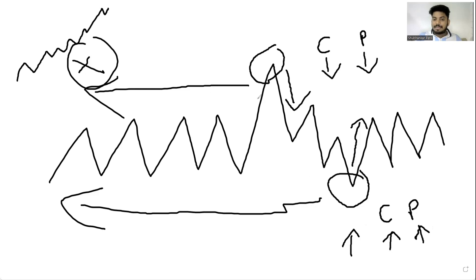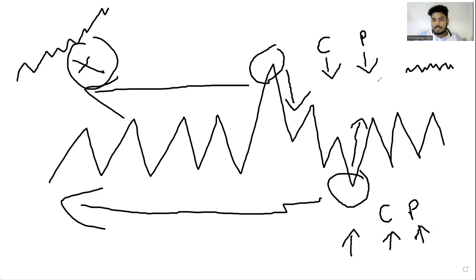So whenever implied volatility makes a top, I will be more inclined towards short volatility trading strategies like short straddles and short strangles. Why? Because if I sell call and put options at this point and the underlying remains flat, my call premium will cool down and put premium will cool down — because the implied volatility is going down.